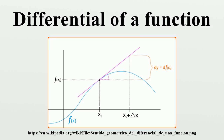The differential was first introduced via an intuitive or heuristic definition by Gottfried Wilhelm Leibniz, who thought of the differential dy as an infinitely small change in the value y of the function, corresponding to an infinitely small change dx in the function's argument x. For that reason, the instantaneous rate of change of y with respect to x, which is the value of the derivative of the function, is denoted by the fraction in Leibniz notation. The quotient dy/dx is not infinitely small; rather it is a real number.